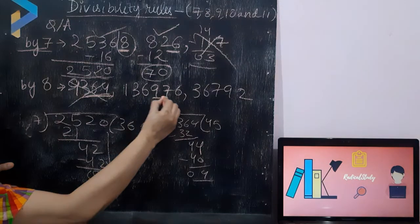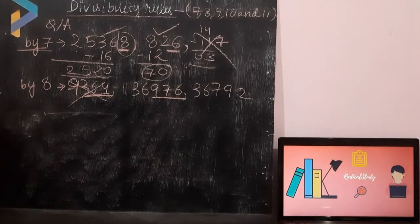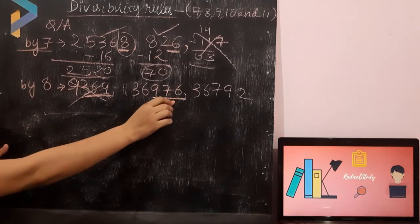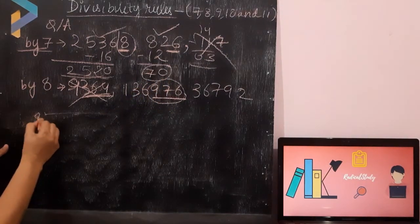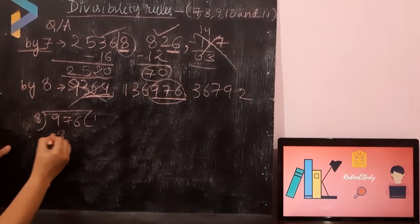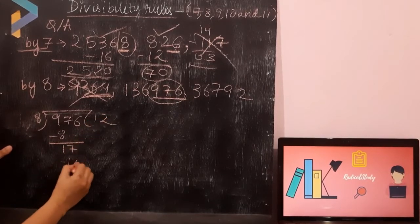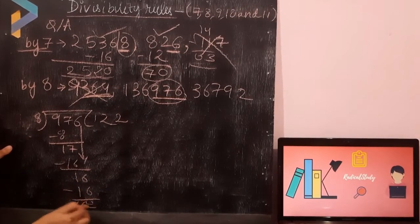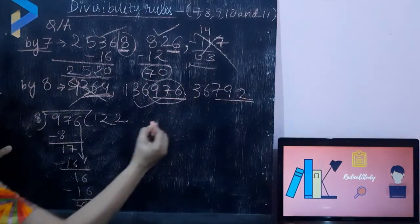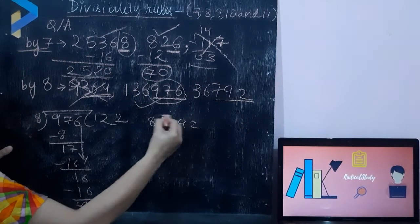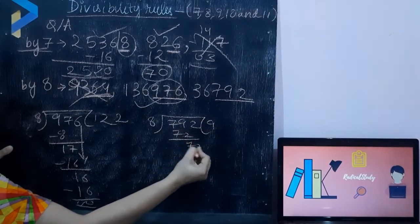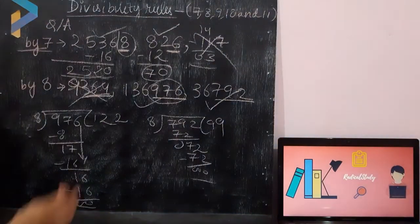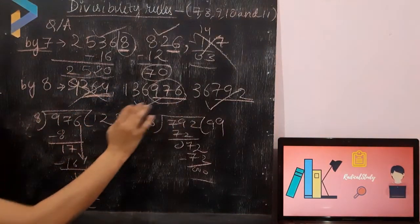Now checking the next number: 1,36,976. We check the last 3 digits — 976. Dividing 976 by 8: 8 twos are 16, 8 twos are 16. This number is divisible by 8. For the next number, checking the last 3 digits and dividing by 8: 8 nines are 72. This number is also divisible by 8. So these two numbers are divisible by 8, but not the first one.